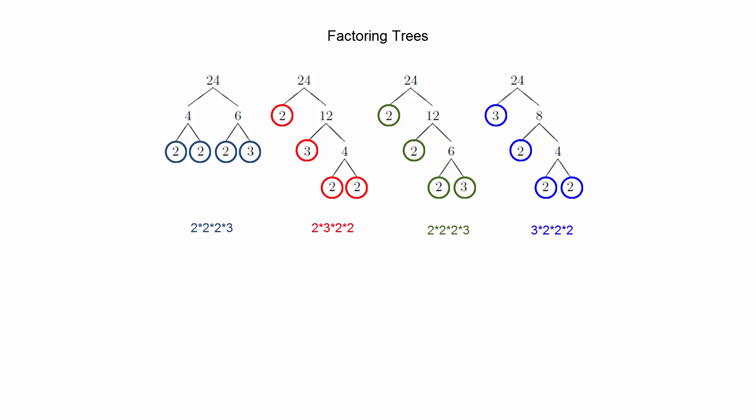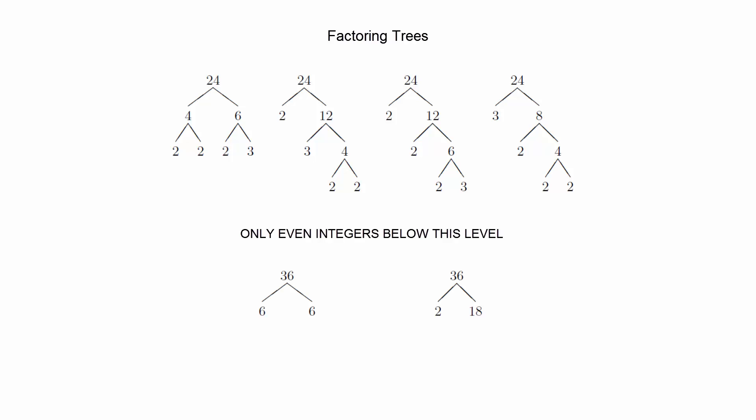This may seem completely obvious based on your experiences, but it turns out that there are many number systems for which this simply isn't true. For example, if we were to use the number system consisting of only even integers, there are numbers like 36 that we can factor as either 6 times 6 or 2 times 18, but neither of those factorizations can be broken out any further unless we use values that aren't even integers.